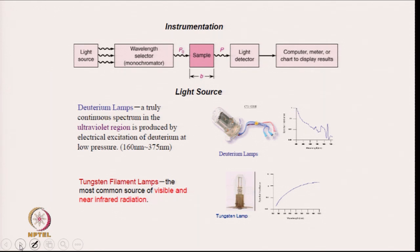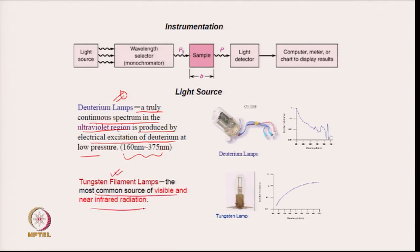There are two different kinds of light sources. One is the deuterium lamp, which gives a truly continuous spectrum in the ultraviolet region produced by electrical excitation of deuterium at low pressure; it gives light in the region 160 nm to 375 nm and is generally used for the UV region. The other is the tungsten filament lamp, which is the most common source of visible and near-infrared radiation.